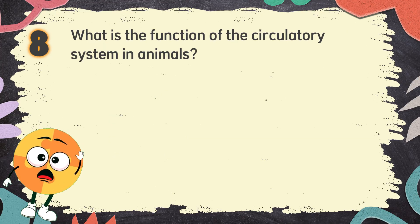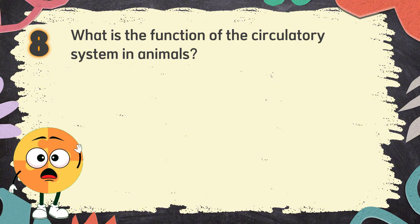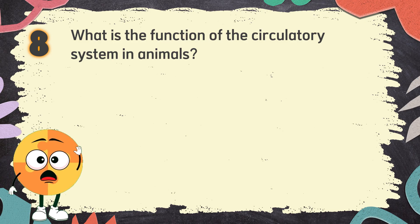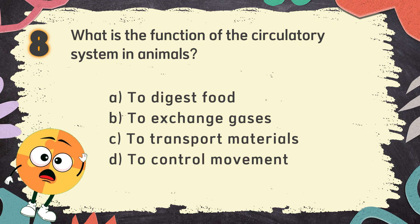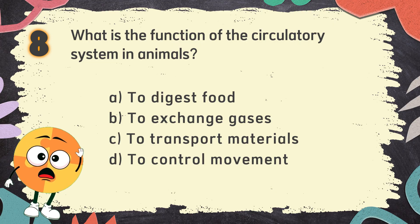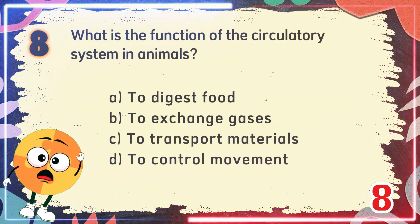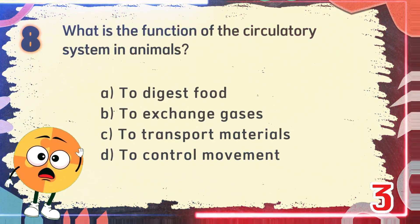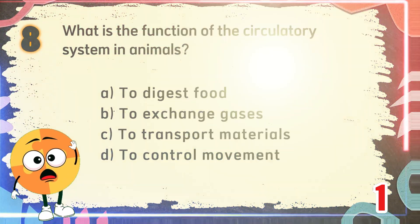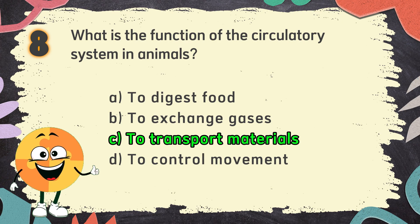Number 8. What is the function of the circulatory system in animals? The choices are A. To digest food, B. To exchange gases, C. To transport materials, D. To control movement. The correct answer is C. To transport materials.